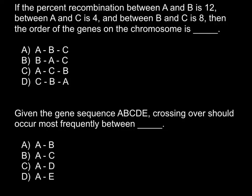And here is the first question. If the percent recombination between A and B is 12, between A and C is 4, and between B and C is 8, then the order of the genes on the chromosome is? And in order to answer this question,